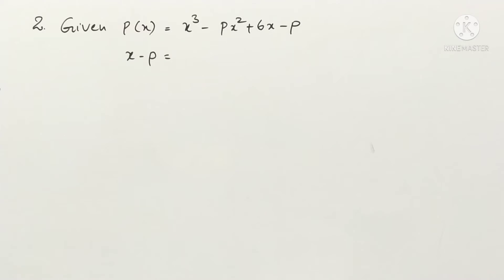Here the given polynomial is this, and we have to find out the remainder when this P(x) is divided by x - p. For that, take x - p and set it equal to 0.